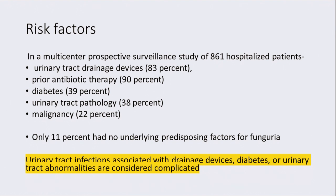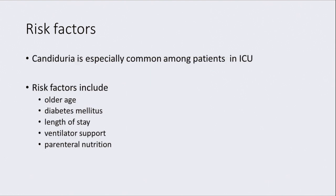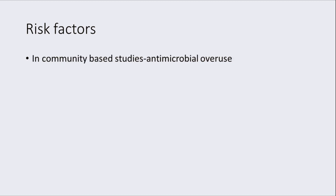Other risk factors include urinary tract drainage device, diabetes, urinary tract pathology, and malignancy. In the ICU, fungal UTI is also very common; risk factors here include older age group, diabetes, length of ICU stay, ventilator support, and parenteral nutrition. In community-based studies, all the above-mentioned risk factors are prevalent, and antimicrobial overuse should also be kept in mind.